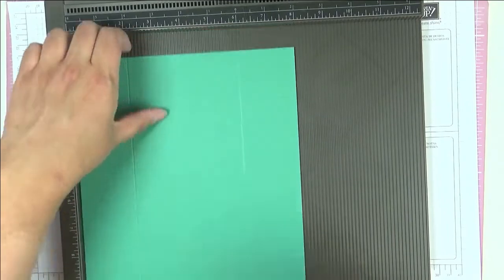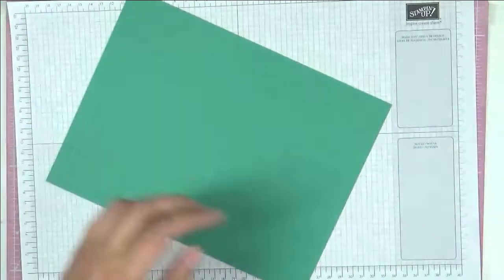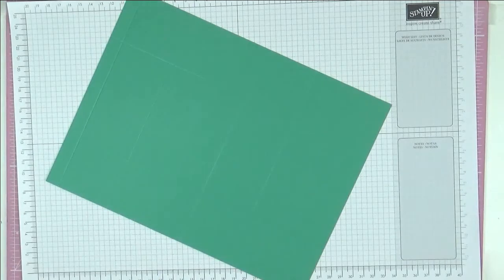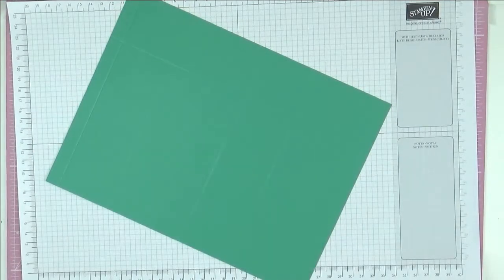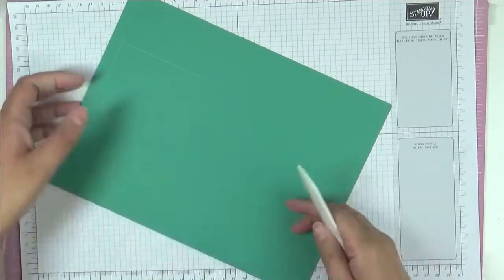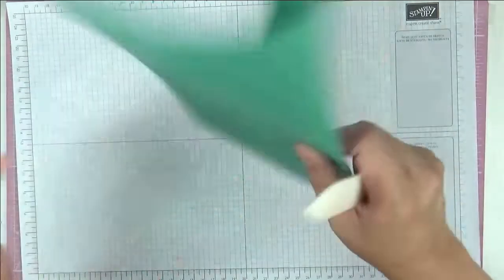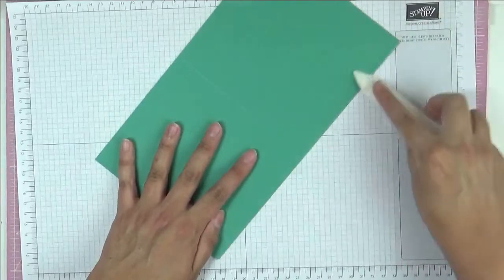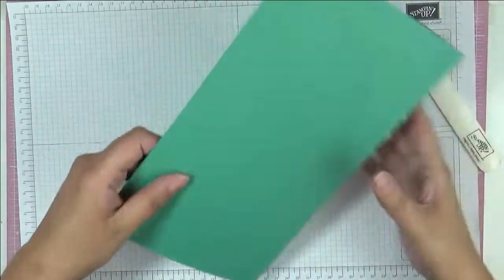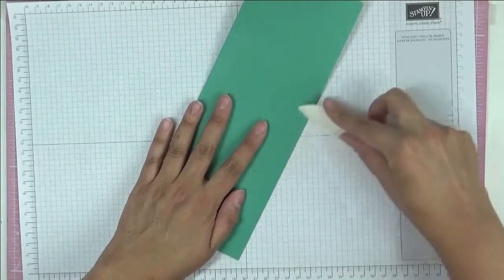Okay, so let's put the scoreboard away, don't need it again, and then we can now fold on all of our score lines. So I'm just going to get my bone folder and burnish all of these lines.